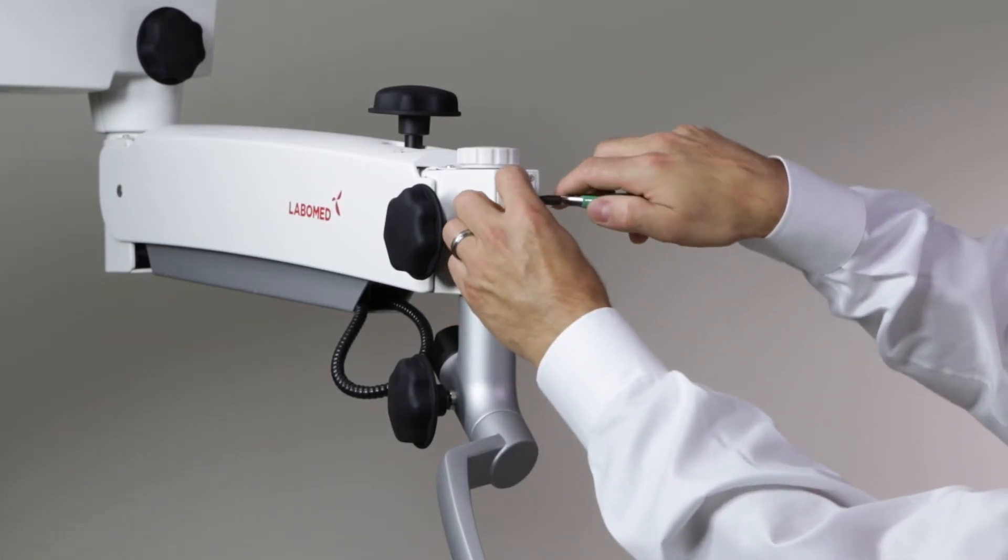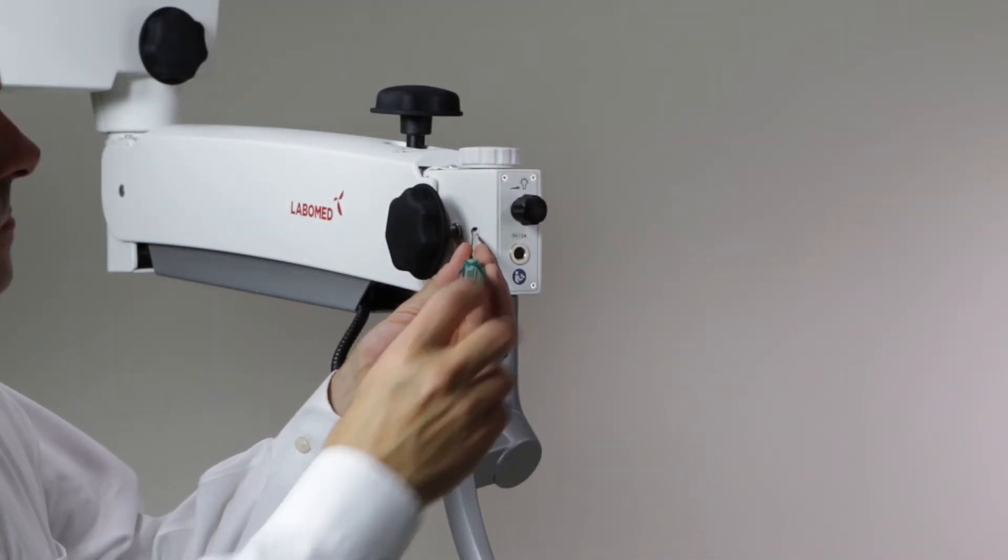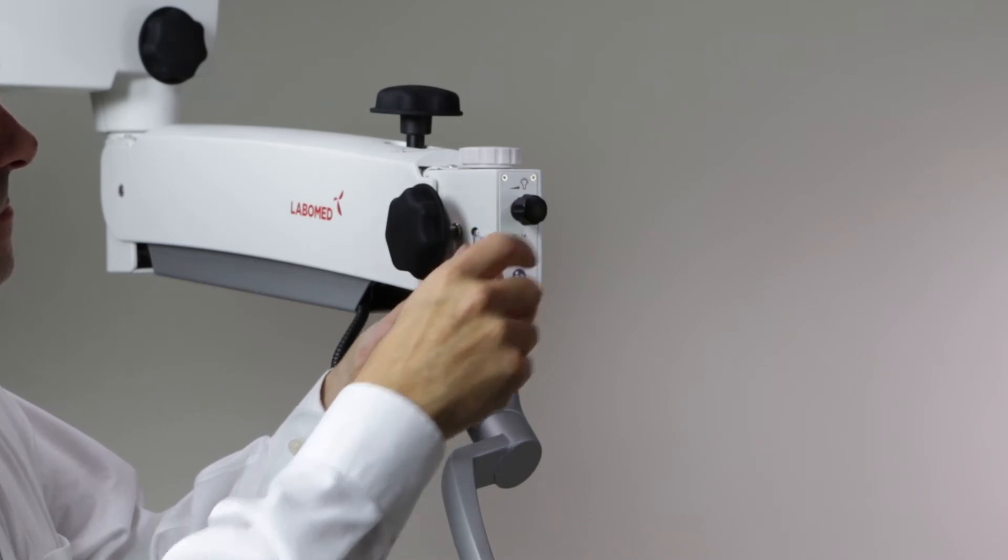Remove the safety screw from the bag attached to the illumination control knob and screw it into the hole next to the illumination knob.